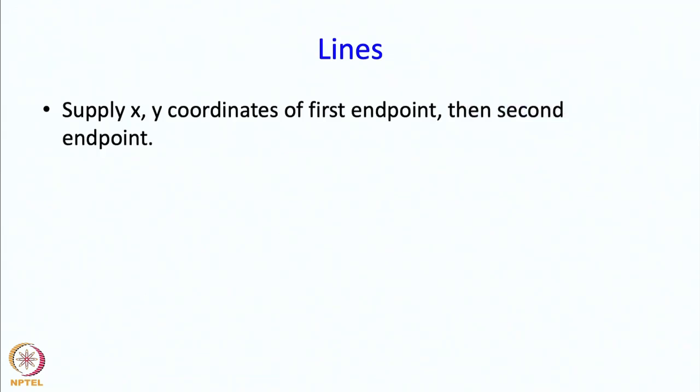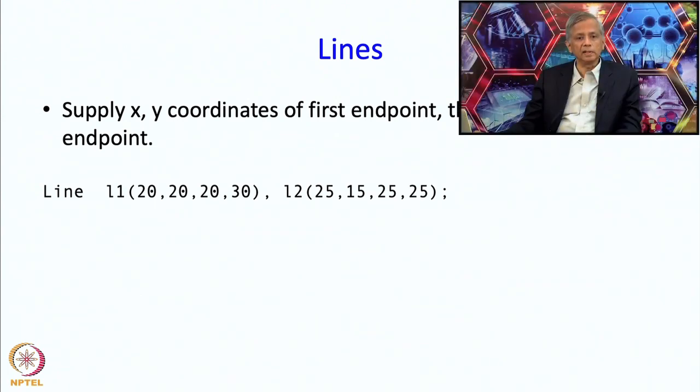You can create lines by supplying the coordinates of the first endpoint and then the coordinates of the second endpoint. For example, here I have a line starting at 20, 20 going to 20, 30. The x coordinate remains the same, the y coordinate goes from 20 to 30, so this is a vertical line.